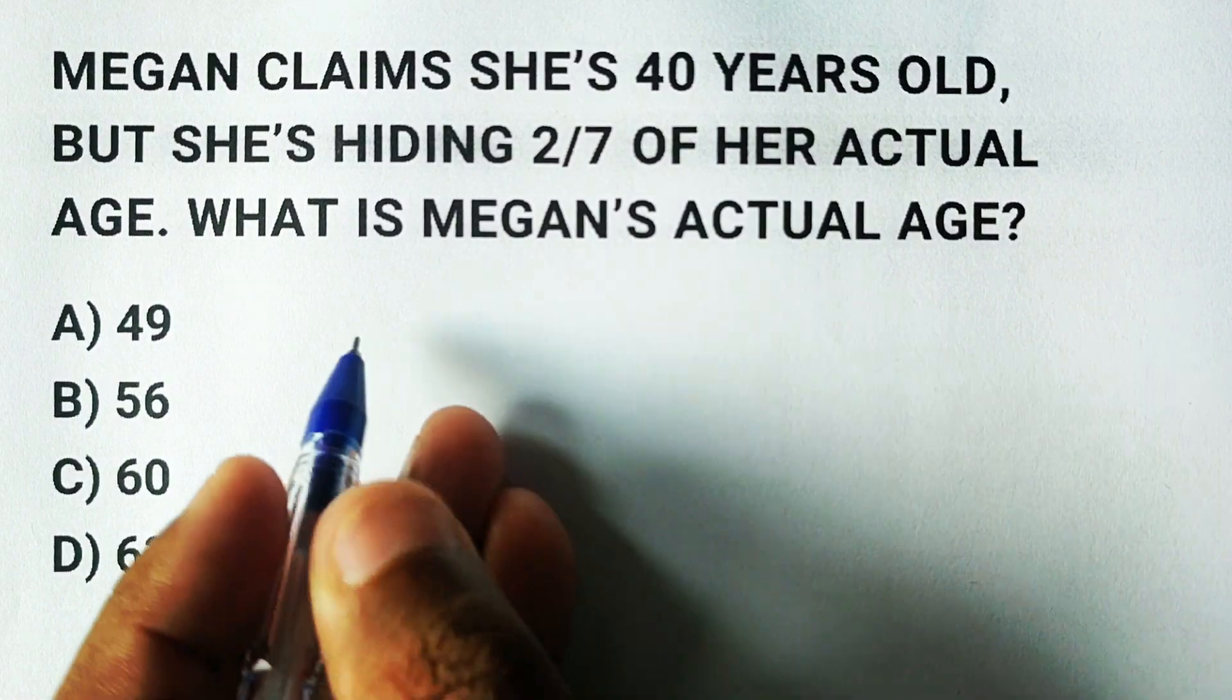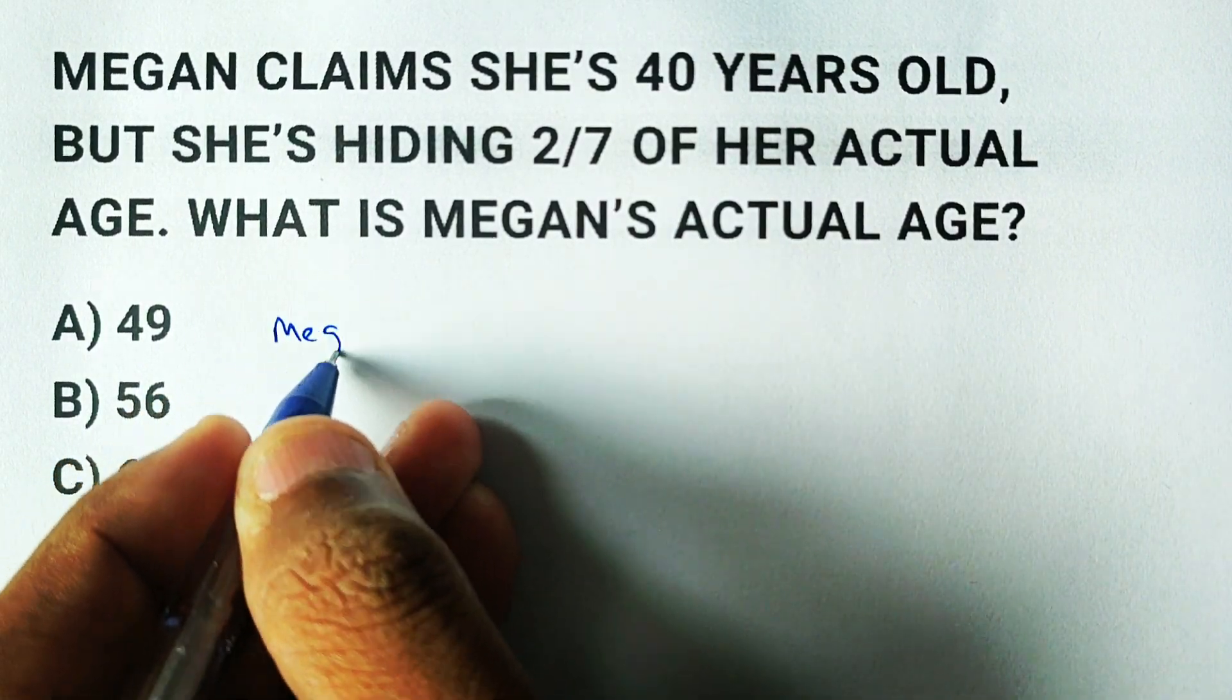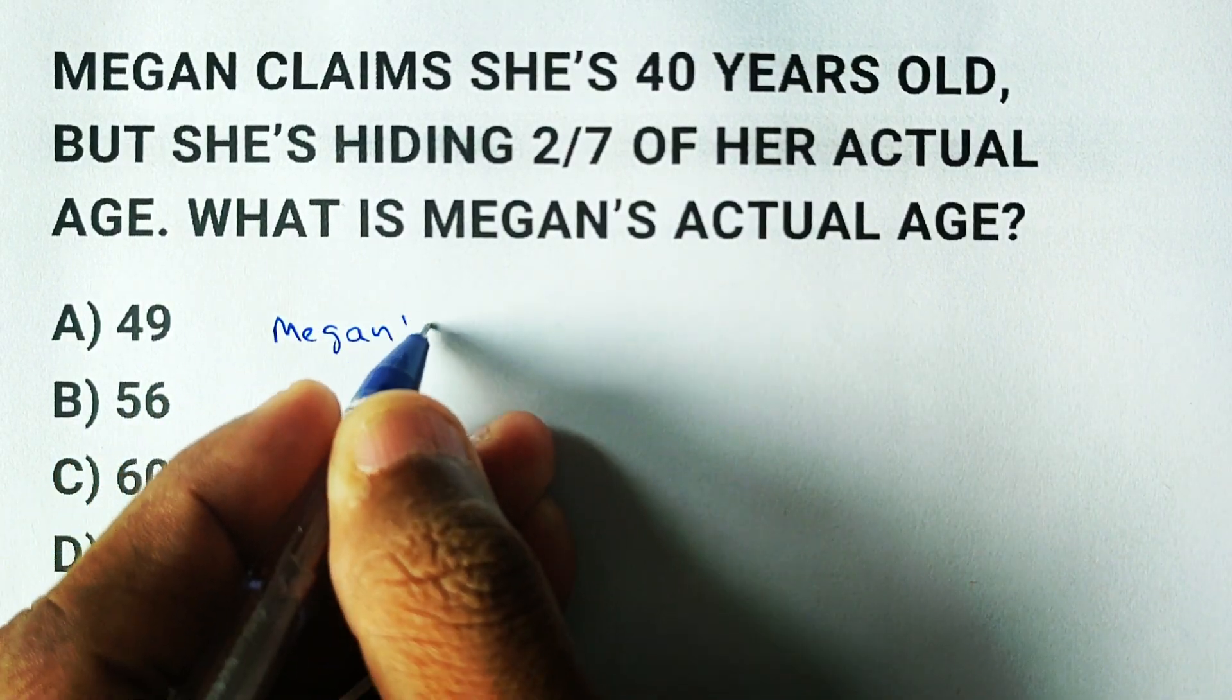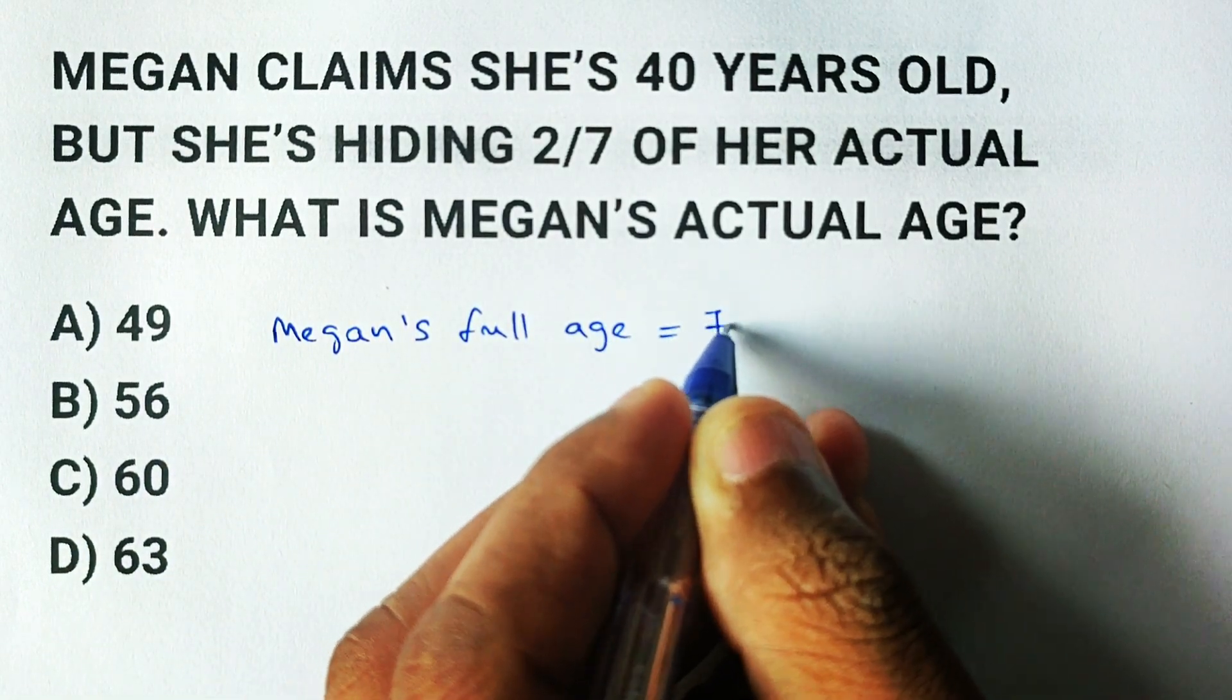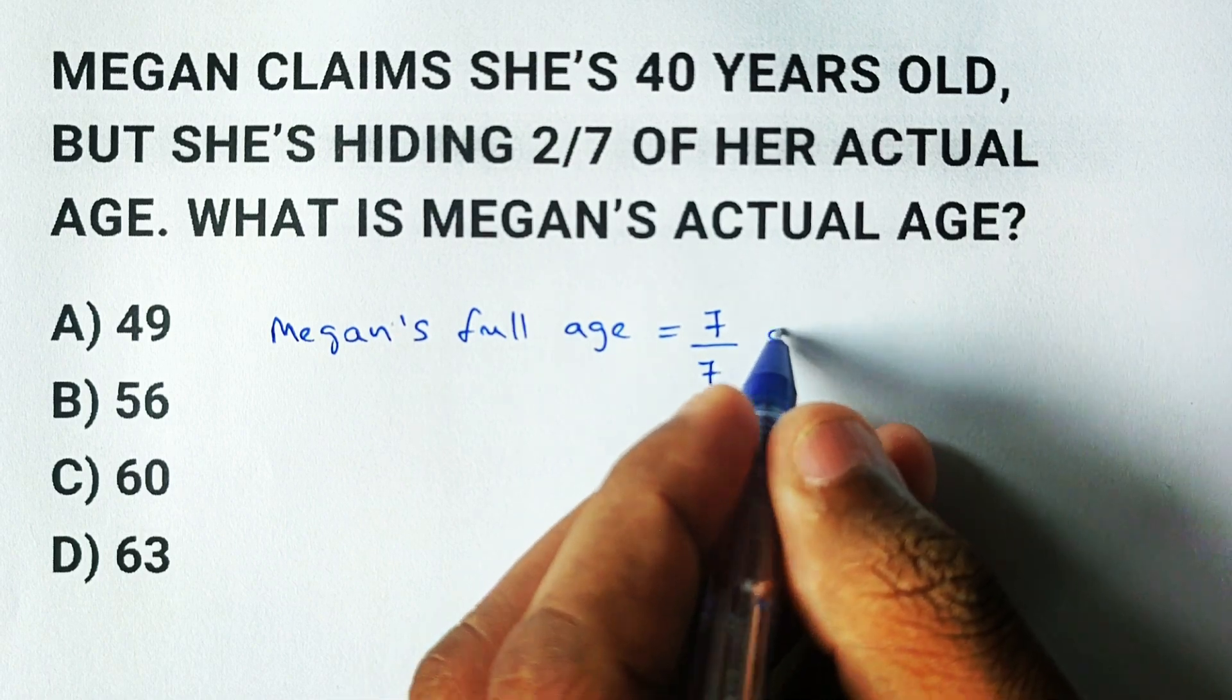To understand this, let's start with the idea that Megan's full age is represented by a whole, or in other words, seven sevenths of her age.